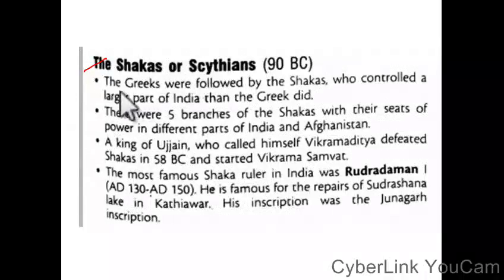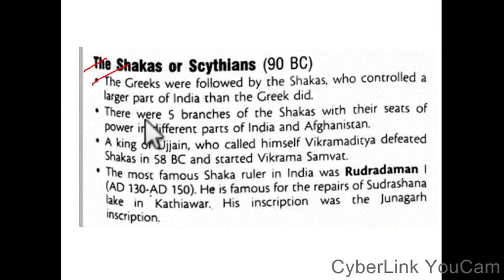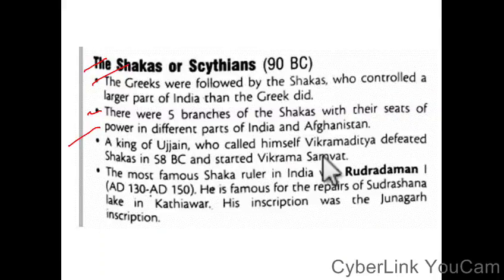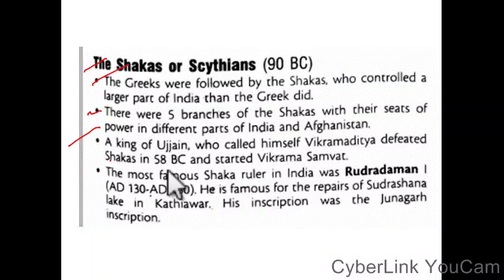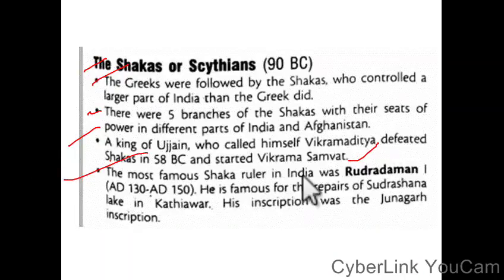The Greeks were followed by the Sakas, also known as Scythians, who controlled a larger part of India than the Greeks did. There were five branches of the Sakas with their seats of power in different parts of India and Afghanistan. The king who called himself Vikramaditya defeated the Sakas in 58 BC and started the Vikram Samvat.